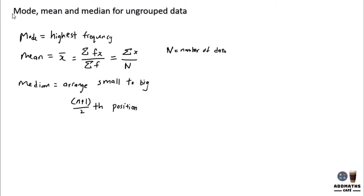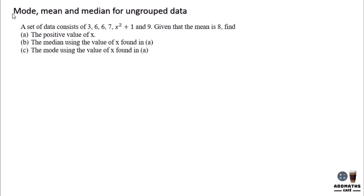So let's try the example. A set of data consists of 3, 6, 6, 7, x squared plus 1, and 9. That's an unknown data over here. Given that the mean is 8, so the mean symbol is this, is equal to 8, find the positive value of x.